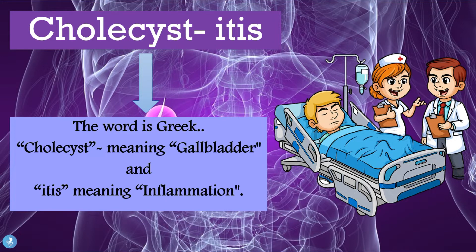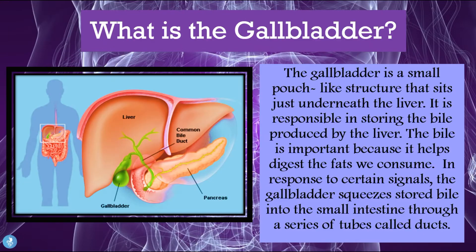What is the gallbladder? The gallbladder is a small pouch-like structure that sits just underneath the liver. It is responsible for storing the bile produced by the liver. Bile is important because it helps to digest the fats we consume. In response to certain signals, the gallbladder squeezes the stored bile into the small intestine through a series of tubes called ducts.